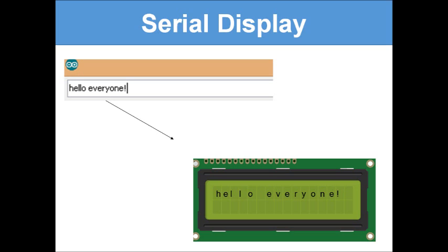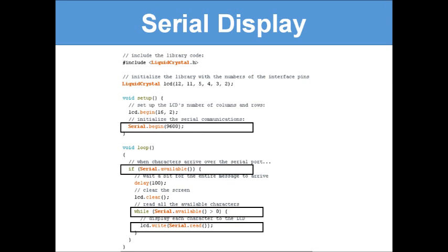Serial display is a small project in its own right. It lets you type something in the Serial Monitor, press Enter, and have it appear on the LCD screen. The Serial Monitor is a way of communicating to your Arduino from your computer — it's in the top-right corner of the IDE. The first thing you do is write `Serial.begin(9600)` — 9600 is simply the standard rate of communication between your computer and the board.